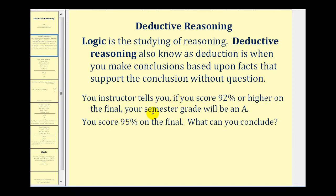For example, if your instructor tells you if you score 92 percent or higher on the final, your semester grade will be an A. Well, if you score 95 percent on the final, what can you conclude? From the given statement, you can conclude that your semester grade will be an A.